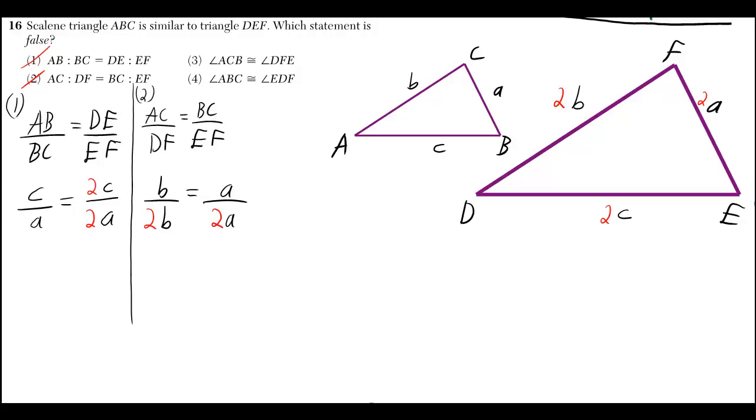They also told us that ABC was scalene, which actually means DEF is going to be scalene. Scalene means that none of the sides are equal, so it's not isosceles, it's not equilateral.